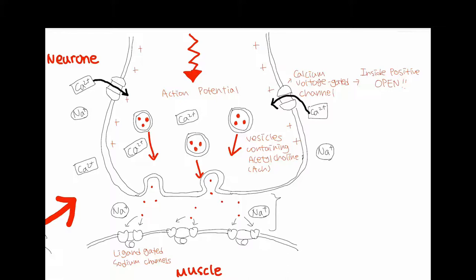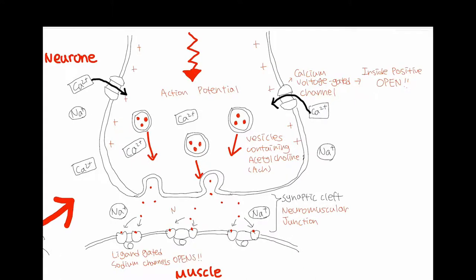There are gap junctions between each muscle cell, meaning cations can flow from one muscle cell to another, so one muscle cell contraction leads to more muscle cell contractions. This causes whole muscles to be able to move, in a process called syncytium.